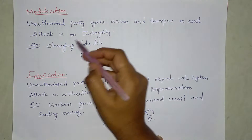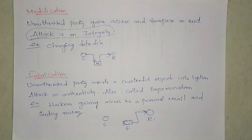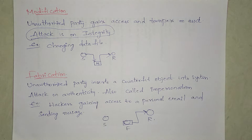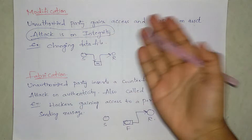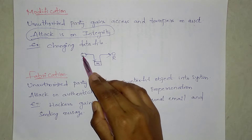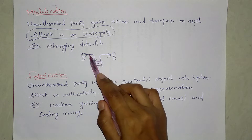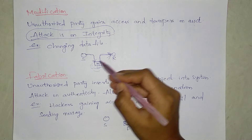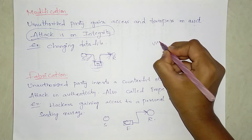Modification means it is an attack on integrity. Integrity means the conversation should happen as a whole — there should be only one path to reach the receiver. In modification, an unauthorized party gains access and tampers with the data. The hacker intercepts the request from the sender, modifies the data, and then sends the modified data to the receiver.